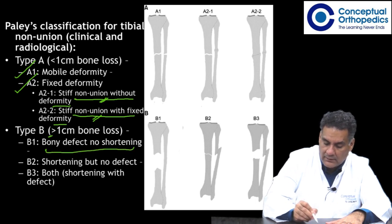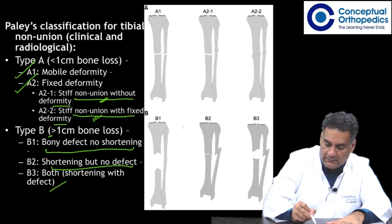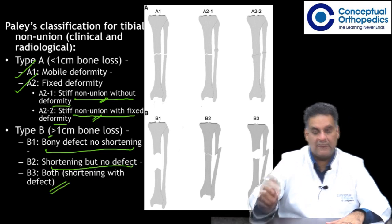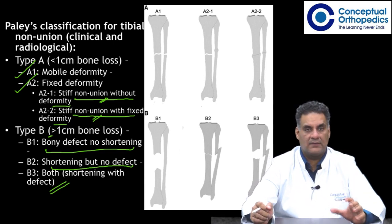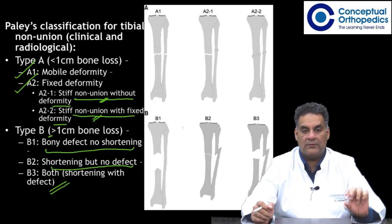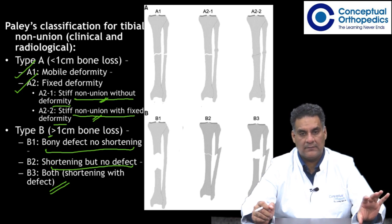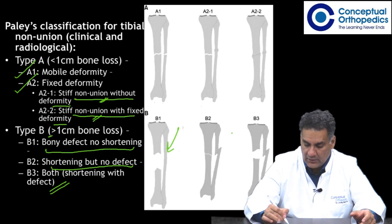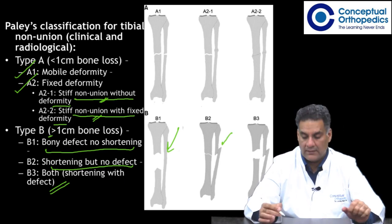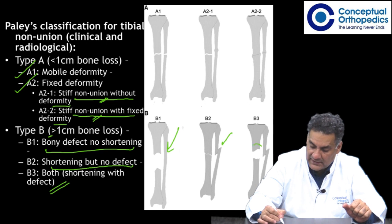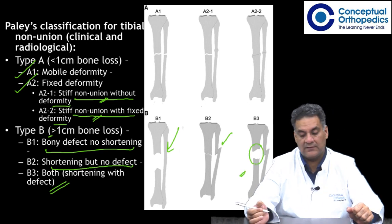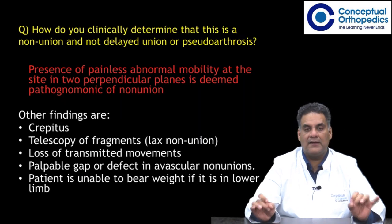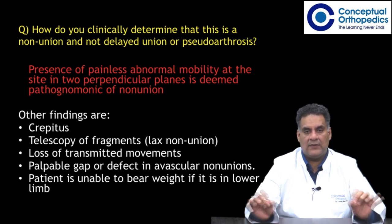Type B involves a bone defect. B1 is bone defect but no shortening — for example, an intact fibula is maintaining length. B2 is shortening but no defect — the fibula also fractured so there is overall loss of length. B3 is shortening with defect — both the fibula is fractured and a gap exists, so both shortening and defect are present.